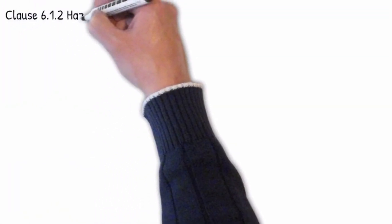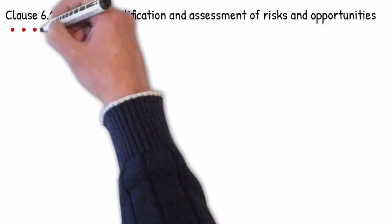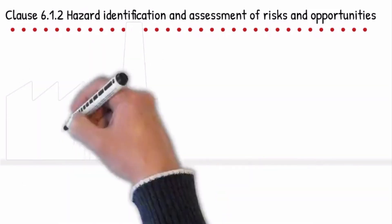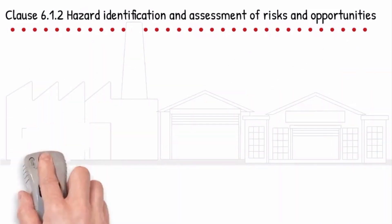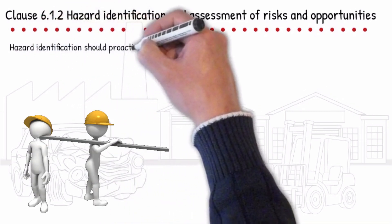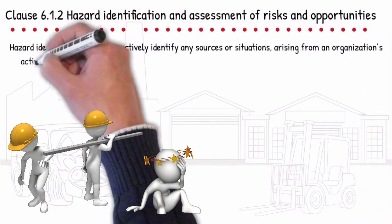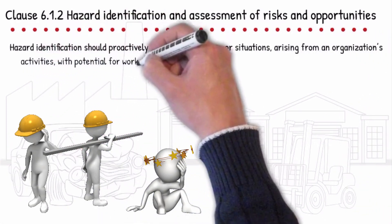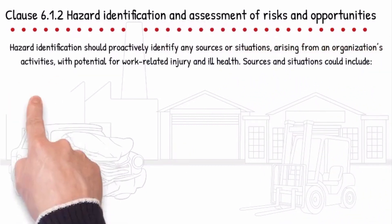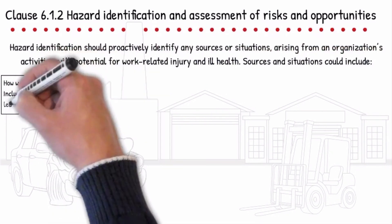Clause 6.1.2 — Hazard identification and assessment of risks and opportunities. Whether you are a start-up company or an established business, there are some simple steps you can take to implement a safety system. Hazard identification should proactively identify any sources or situations arising from an organization's activities with potential for work-related injury and ill health. Sources and situations could include how work is organized, including social factors, leadership and culture.